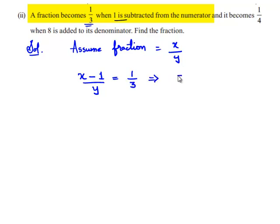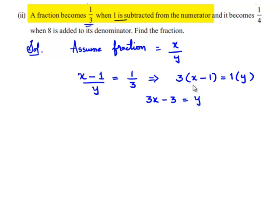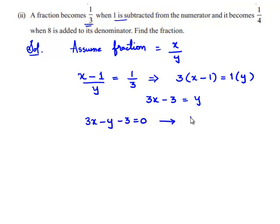On cross multiplication, this becomes 3 times (x − 1) equals 1 times y, which gives us 3x − 3 = y. Transposing y to the left-hand side, we get 3x − y − 3 = 0. Assume this as Equation 1.